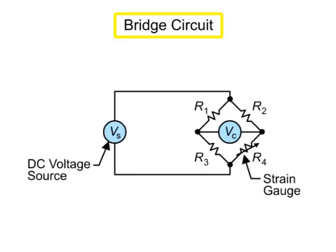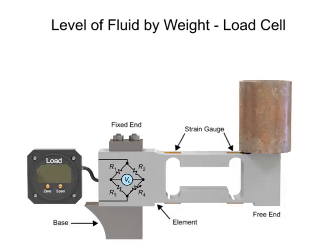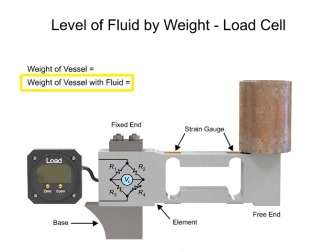Connected to a bridge circuit, the force measured is proportional to the output voltage. The output voltage is converted to a level measurement when vessel weight and vessel fluid density is known.